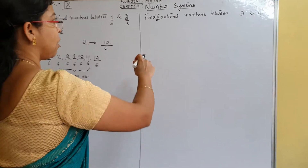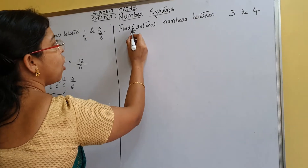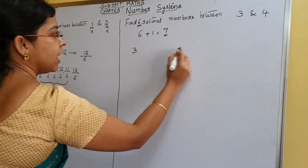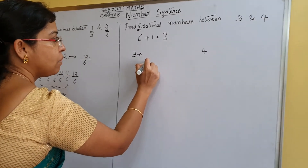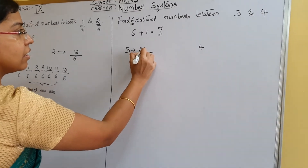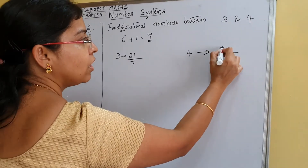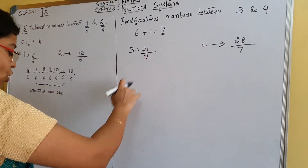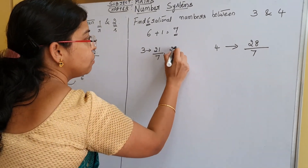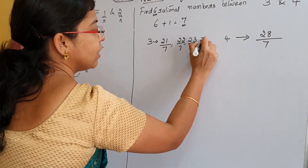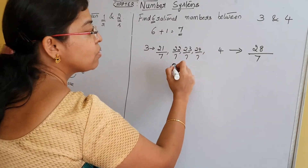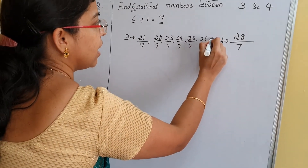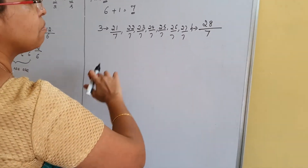Next problem: find 6 rational numbers between 3 and 4. We need 6 numbers, so 6 plus 1 equals 7 — this becomes the denominator. Write the limits: 3 becomes 21 by 7, and 4 becomes 28 by 7. Between 21 by 7 and 28 by 7, increment the numerator by 1: 22 by 7, 23 by 7, 24 by 7, 25 by 7, 26 by 7, and 27 by 7. These are the 6 rational numbers between 3 and 4.